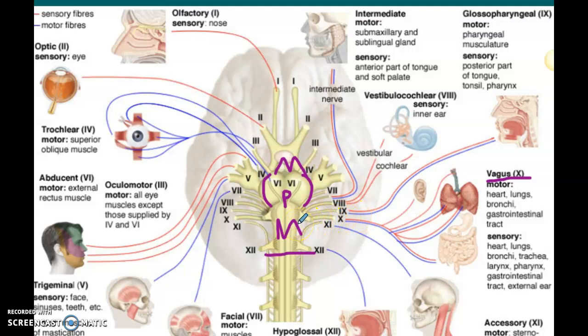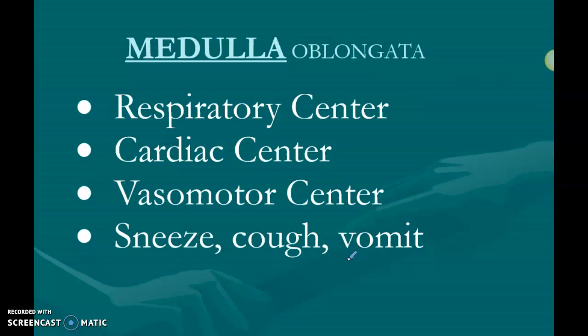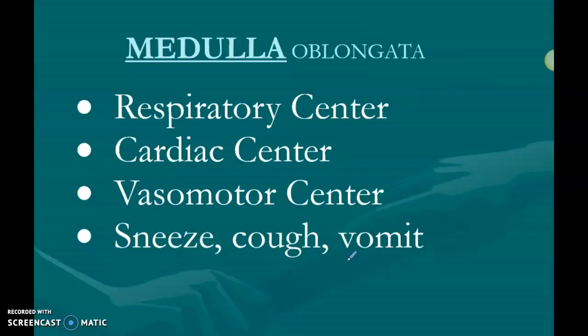Vagus nerve number 10 goes to your heart and your lungs. So the medulla oblongata is your respiratory center — it controls your diaphragm and helps you breathe. It's also your cardiac center — it helps control the pace of the heart. You can either memorize a list that says 'helps me breathe and helps my heartbeat,' or you can understand the why through cranial nerves. For now, just know that the medulla oblongata is over your respiration and your cardiac function — those are its two main functions.